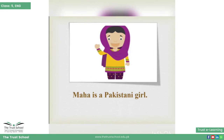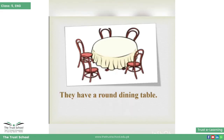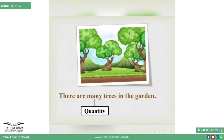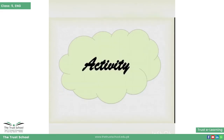'Maha is a Pakistani girl' — here the word 'Pakistani' is telling us about the origin of the girl. 'They have a round dining table' — is jumle mein word 'round' se hume table ki shape ke baare mein pata chalta hai. 'There are many trees in the garden' — is jumle mein word 'many' se hume pata chalta hai ki garden mein kitne trees hain, so the word 'many' is telling us about the quantity.